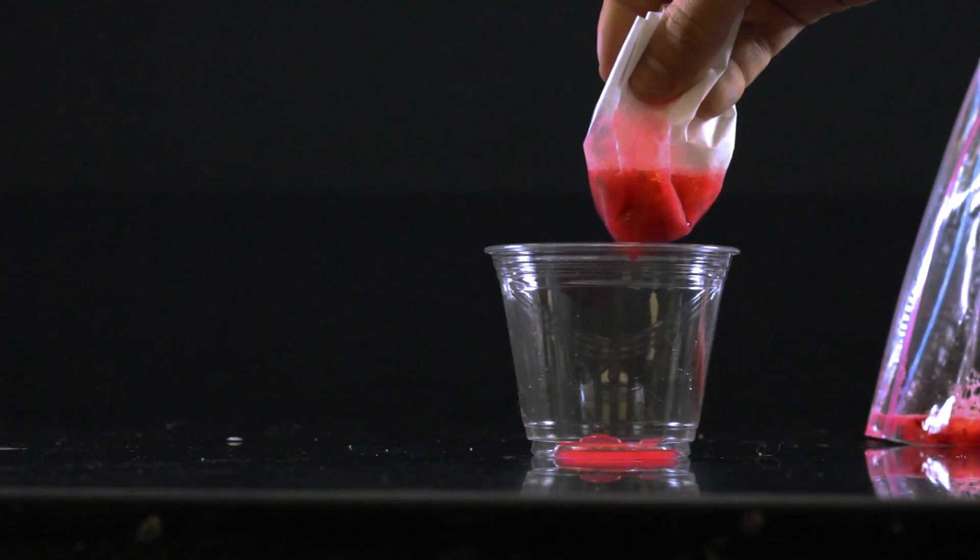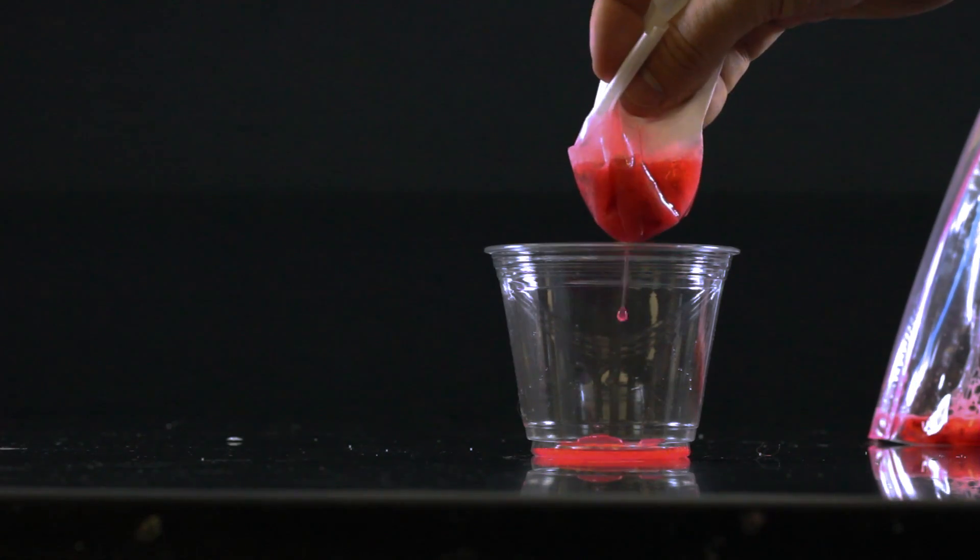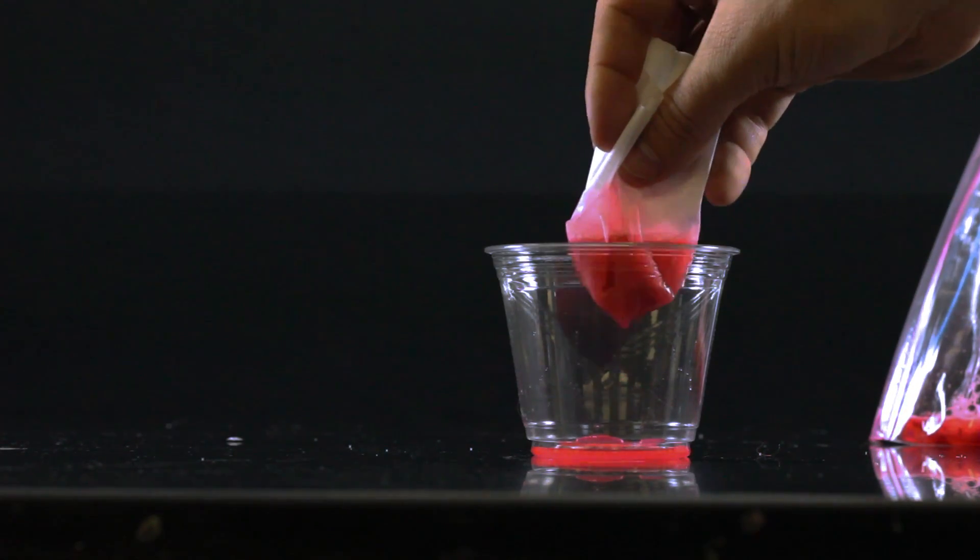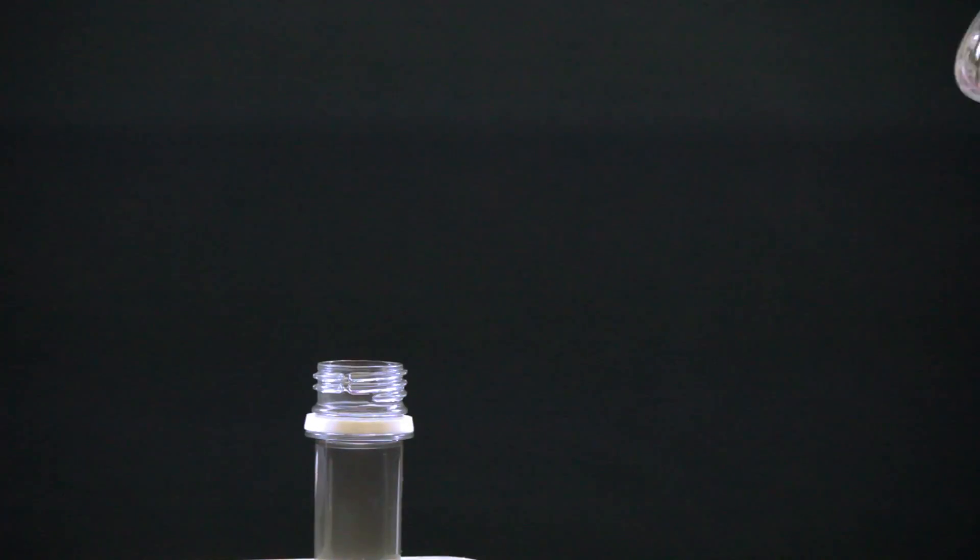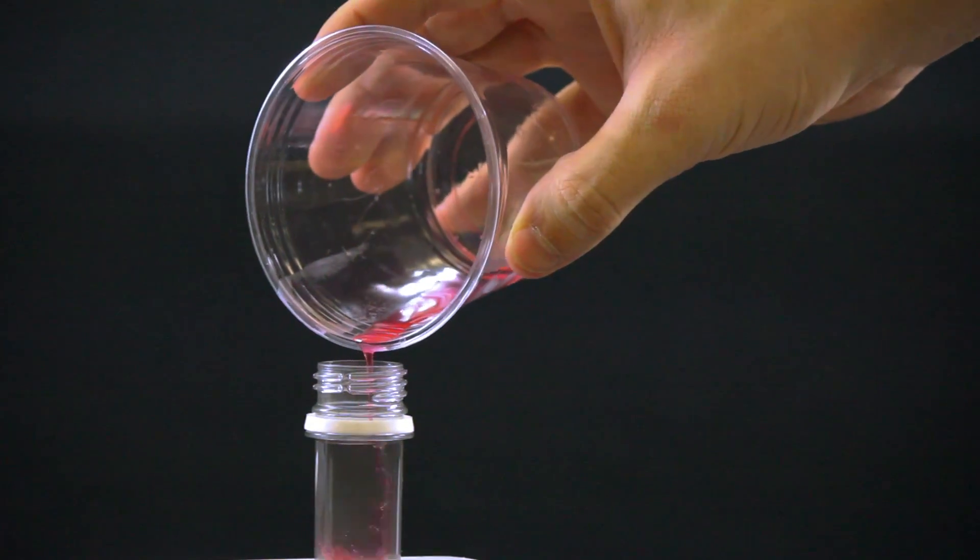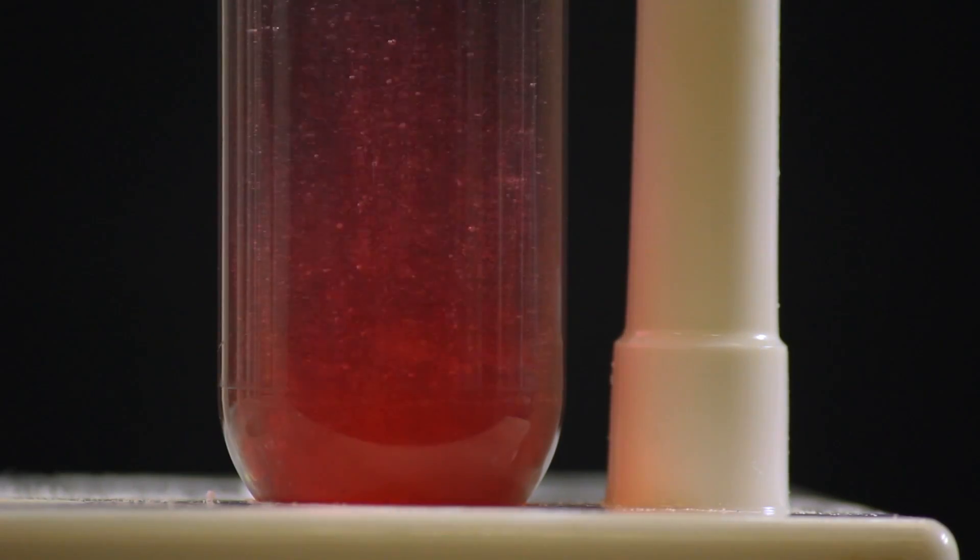Removing the DNA from this solution is the final step in the process. To do this we mix the solution with isopropyl alcohol. DNA is not soluble in isopropyl alcohol and because of this it'll clump together and float to the top.